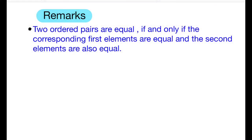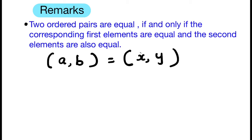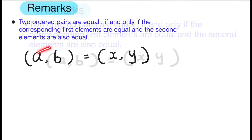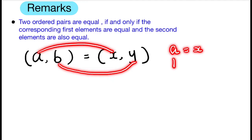Remarks: Two ordered pairs are equal if and only if the corresponding first elements are equal and the second elements are also equal. The ordered pair (a, b) is equal to the ordered pair (x, y) if and only if a is equal to x and b is equal to y.